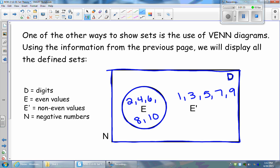You'll notice that the N is outside of the rectangle that represents our universal set D, and this is because N does not exist as a subset of D. N is an empty set, so it would fall outside of our universal set of digits D.